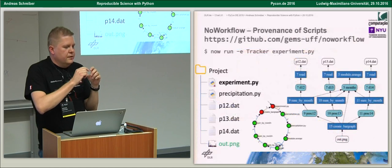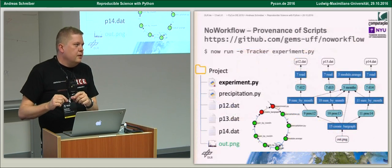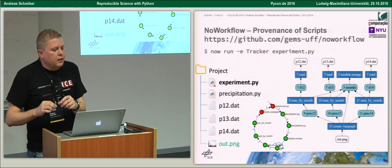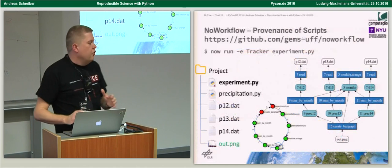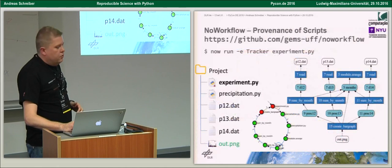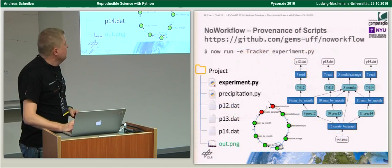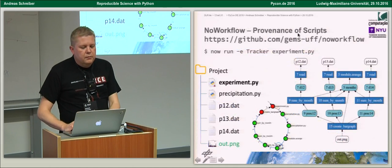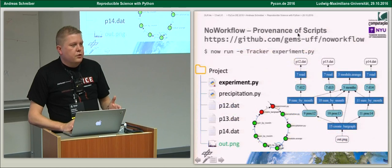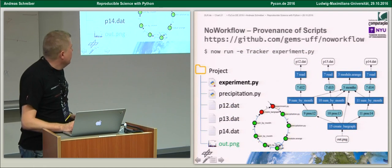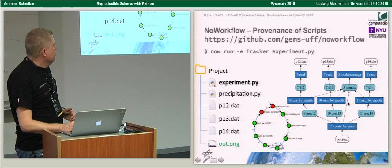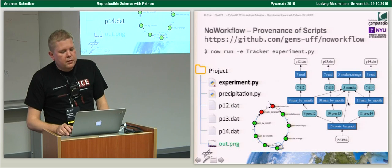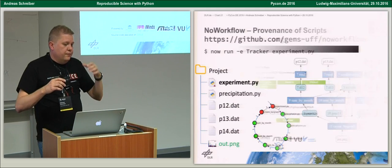If you don't want to add provenance recording statements in your code manually — which is similar to logging on the programming side — you can use tools like noWorkflow. With noWorkflow, you start your Python file in the noWorkflow environment and it records all the provenance for you. For example, the resulting graph shows the different input files in your repository or project directory and the output files, and you can analyze how the data was produced.